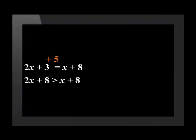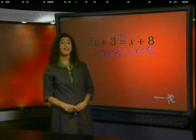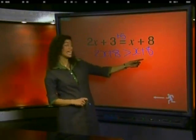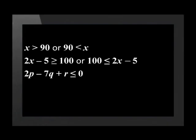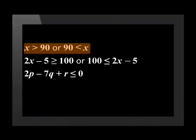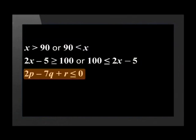The value of the left-hand side is greater than the value of the right-hand side. Actually, you could also read this the other way around. The value of the right-hand side, x plus 8, is less than the value of the left-hand side, 2x plus 8. Here are some more examples of linear inequalities: x is greater than 90, or 90 is less than x; 2x minus 5 is greater than or equal to 100, or 100 is less than or equal to 2x minus 5; and 2p minus 7q plus r is less than or equal to 0.